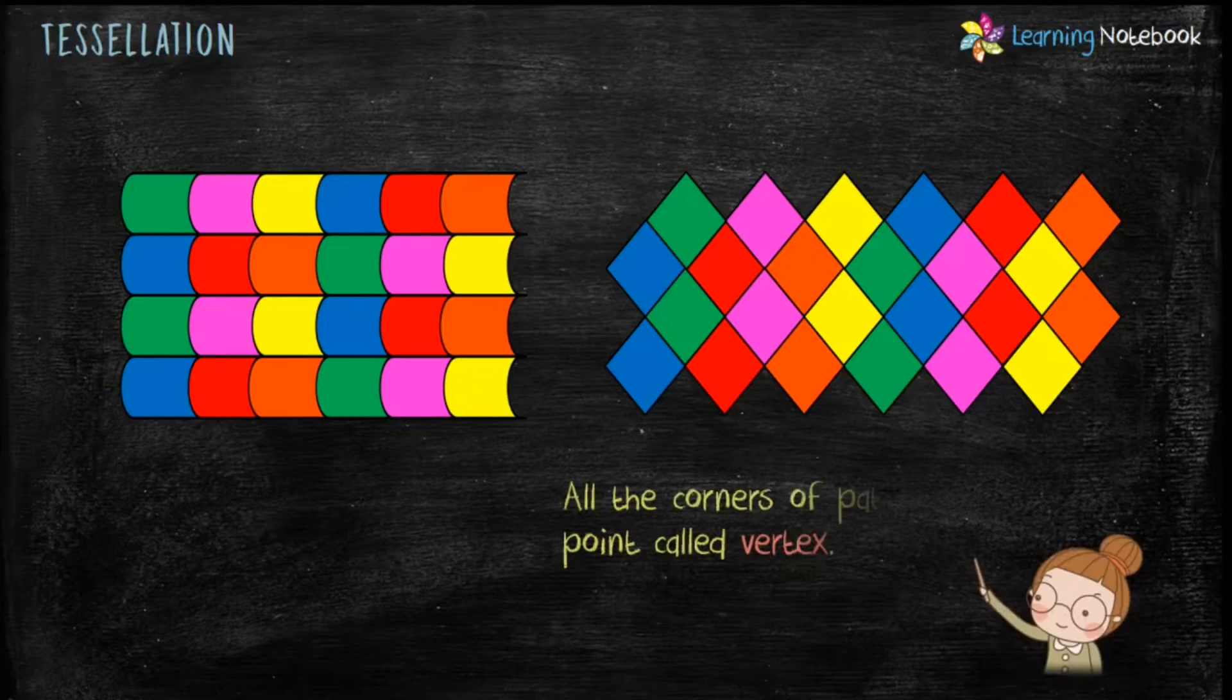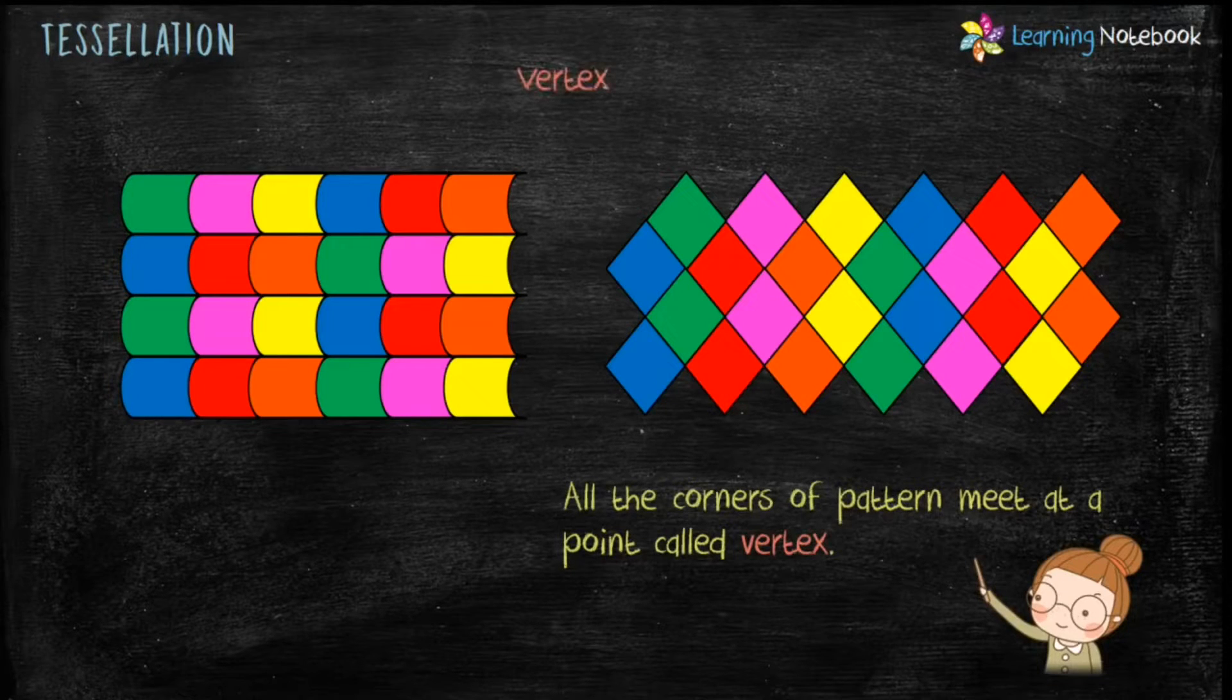In tessellation, all the corners of pattern meet at a point called vertex as you can see here.